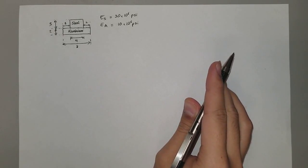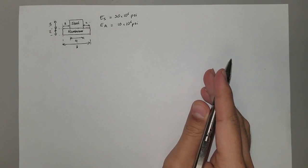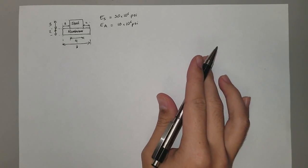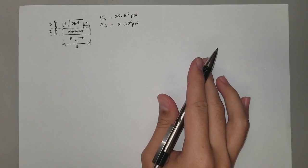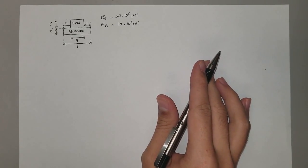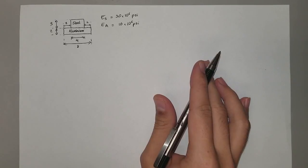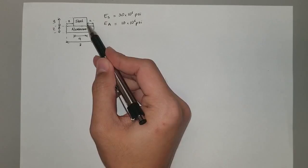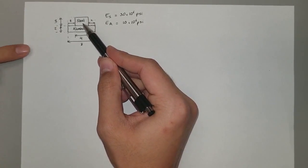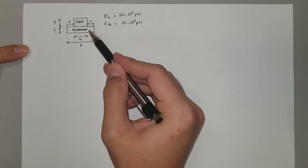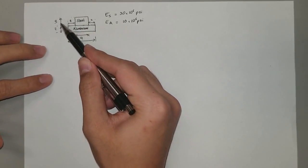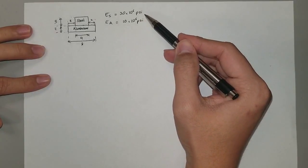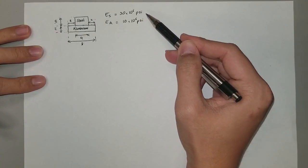Hey guys, welcome back. Per your request, today I'll be doing an example showing you how to calculate the moment of inertia of an object that is composed of different materials. Here we have a section made of steel on top and aluminum at the bottom with given dimensions, as well as the modulus of elasticity for steel and aluminum.